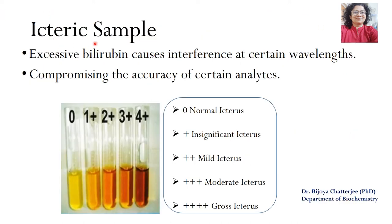The third factor is icterus. Icterus is caused by excessive bilirubin, which causes discoloration of the serum or plasma, and this excessive bilirubin will interfere at certain wavelengths, compromising the accuracy of certain analytes. The gradation of icterus depends on the increasing amount of bilirubin: 0 indicates normal bilirubin levels, 1 plus indicates insignificant icterus, 2 plus indicates mild icterus, and 3 and 4 plus indicate moderate and gross icterus.